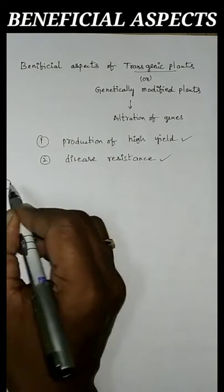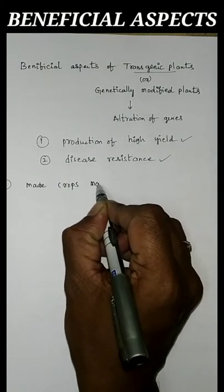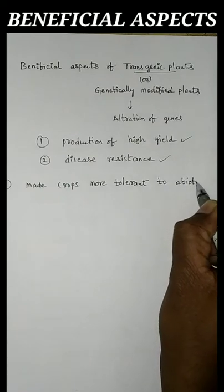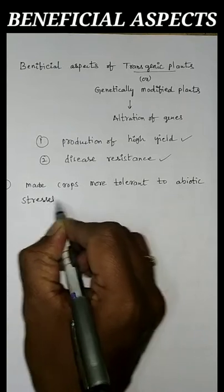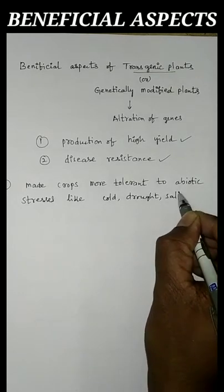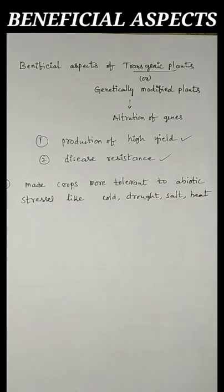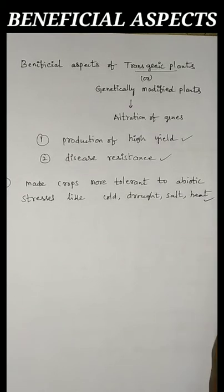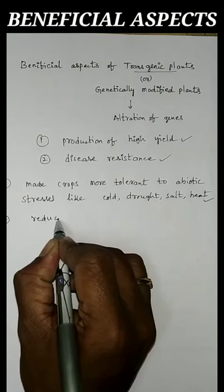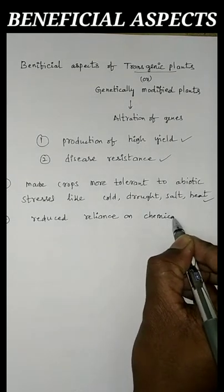One additional function is they are useful in making crops more tolerant to abiotic stress. Transgenic plants are more tolerant to abiotic stress like cold, drought, salt, and heat. Second, they are useful in reducing reliance on chemical pesticides.